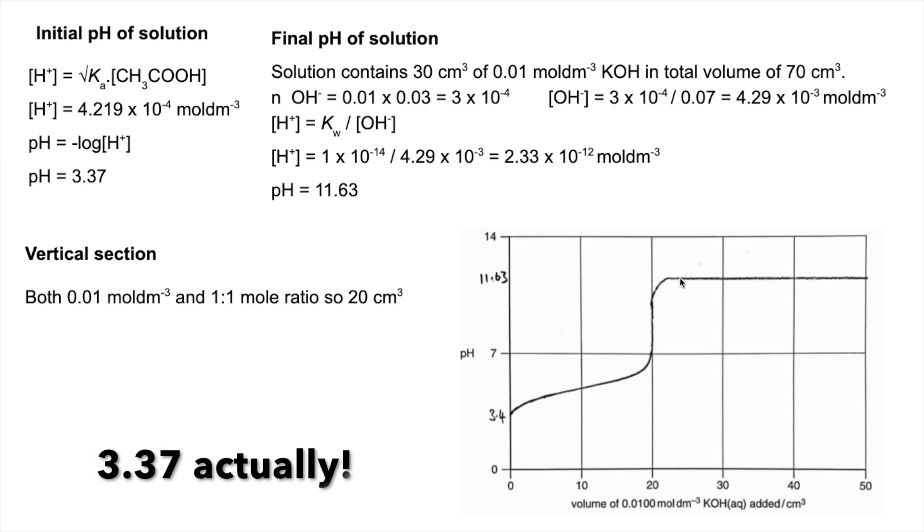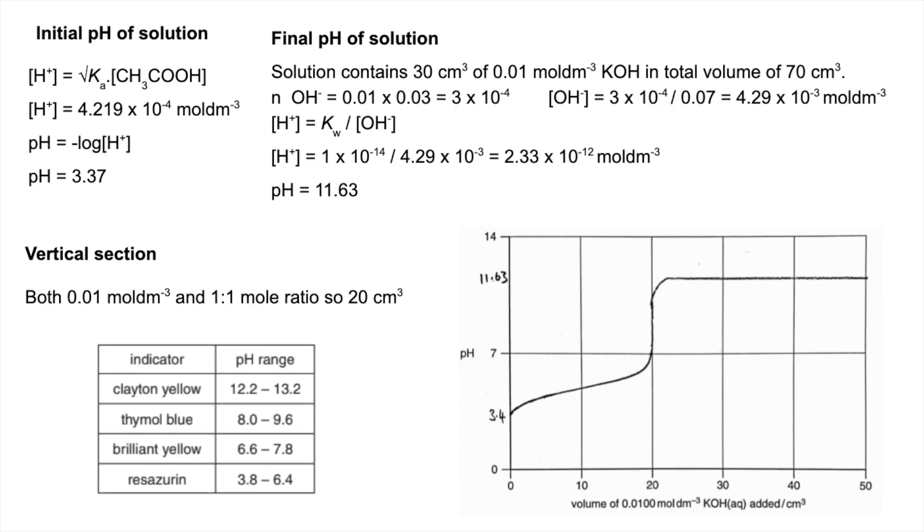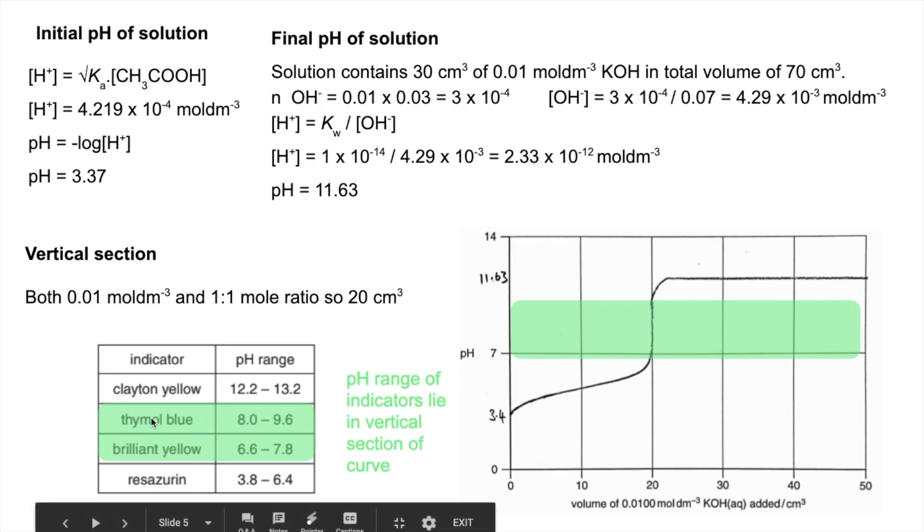So the curve will look like that. It's starting at 3.4, then rises, flicks up at 20, and then plateaus at 11.63. In terms of indicator there's actually two possible choices you could go for either of those two because both of their pH ranges lie in that vertical section. As long as you qualify why you've chosen, say thymol blue with that statement, you'd be absolutely fine.